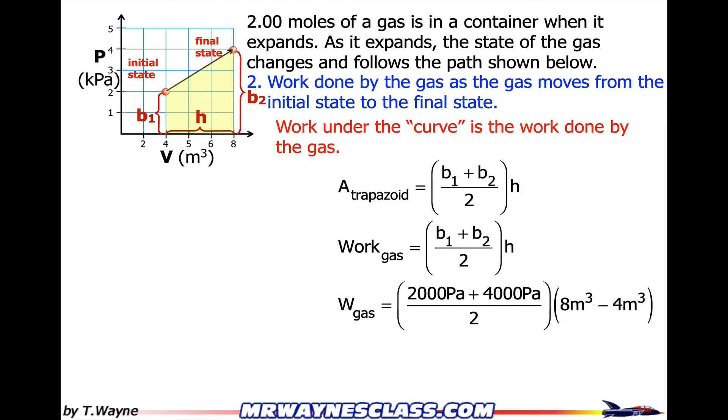So the work done by the gas is base 1 plus base 2, that's 2,000 plus 4,000 divided by 2, times the height, which is 8 minus 4 meters cubed. And that means that the work done by the gas is a positive 16,000 joules.